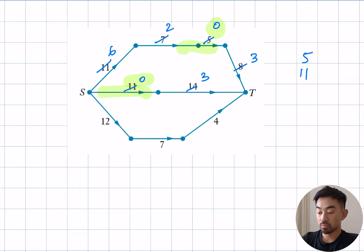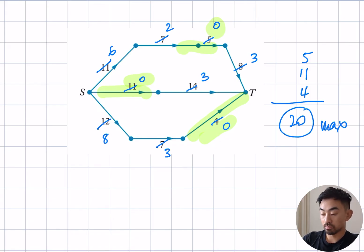Now down the bottom, 12, 7 and 4, obviously the smallest is 4. So I write 4 over here and I subtract to get 8, 3 and 0. So this one is done. It looks like I'm all done. Add up all my numbers. So 5 plus 11 is 16, 16 plus 4 is 20. So 20 is my max flow.